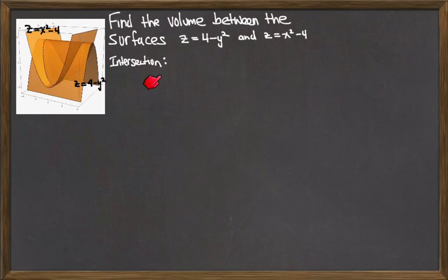And to figure that out, we look at it algebraically. We look at its intersection. They intersect where their z coordinates are the same. So I'm going to take their z coordinates on those surfaces and set them equal to each other.